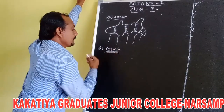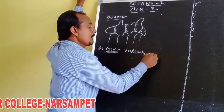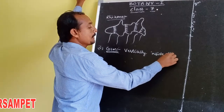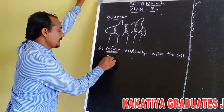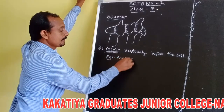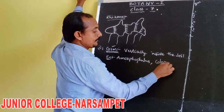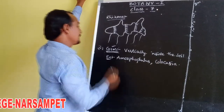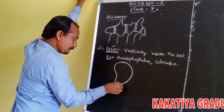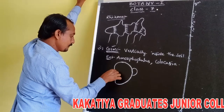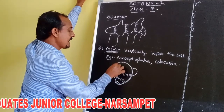Second is corm. The underground part of the plant that grows vertically inside the soil — this type of underground stem modification is called corm. Examples are Amorphophallus (jimikand) and Colocasia.